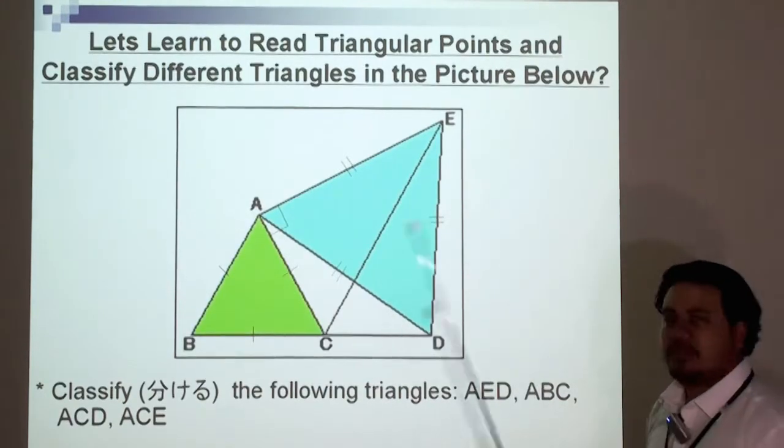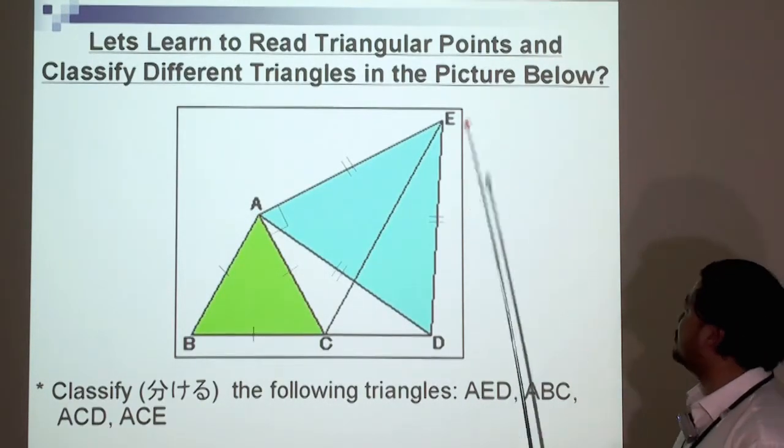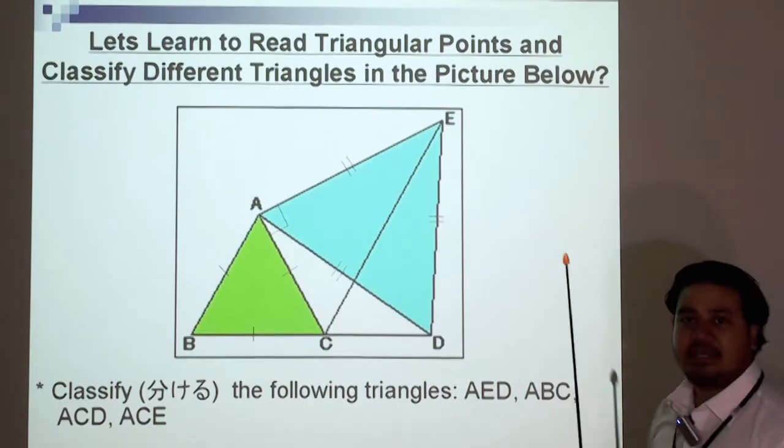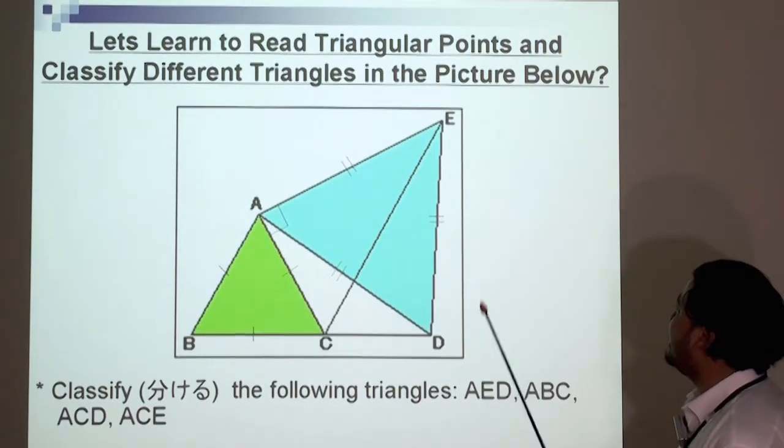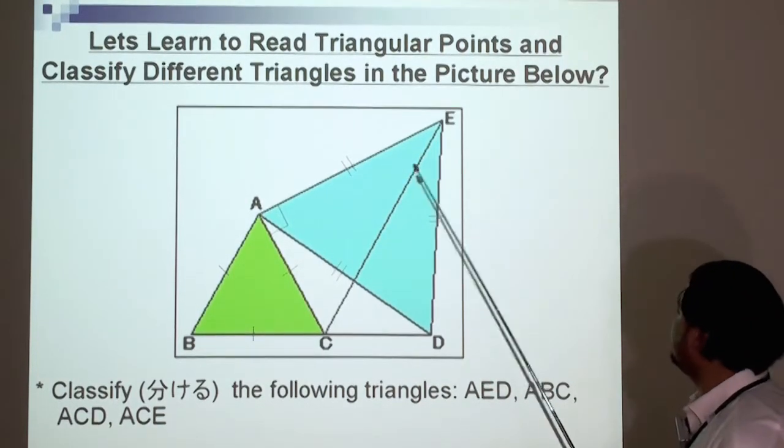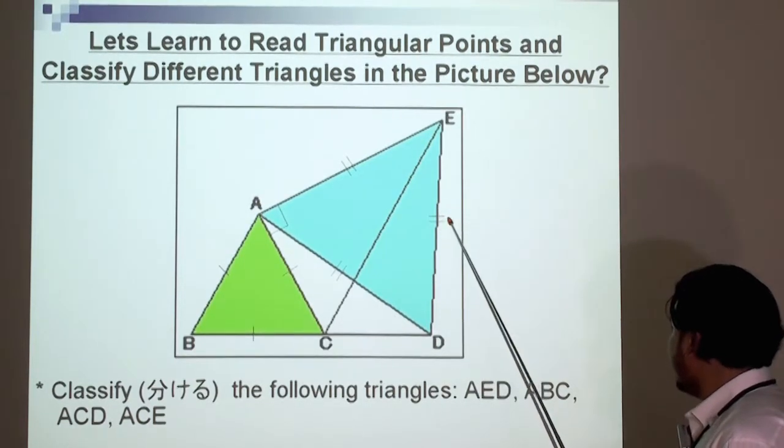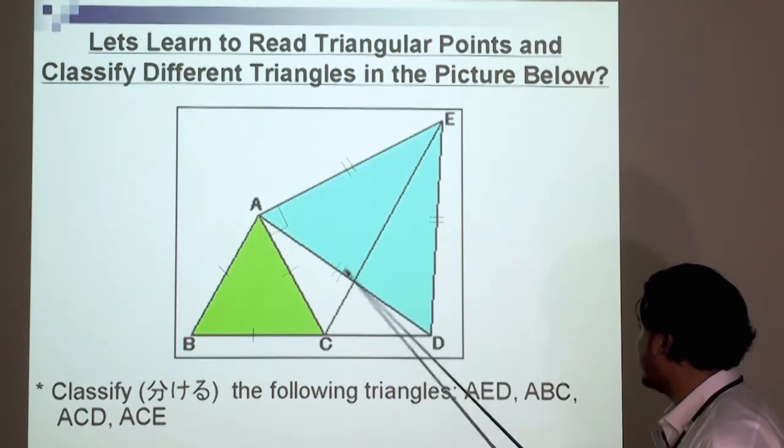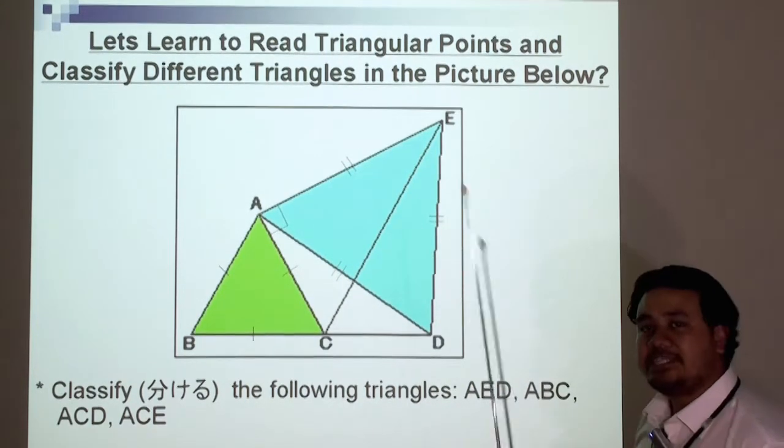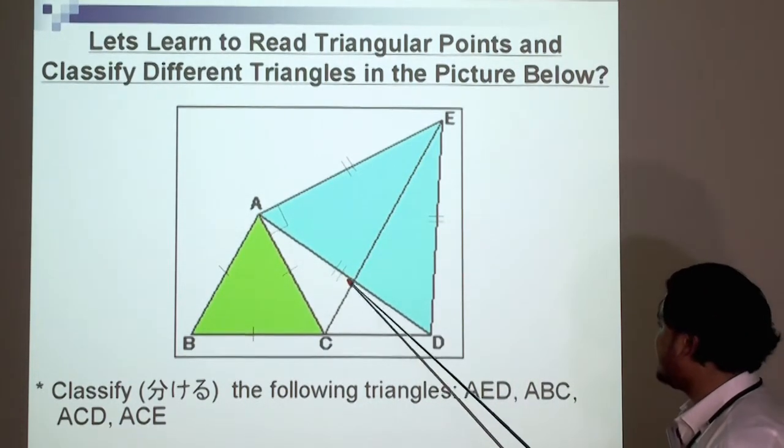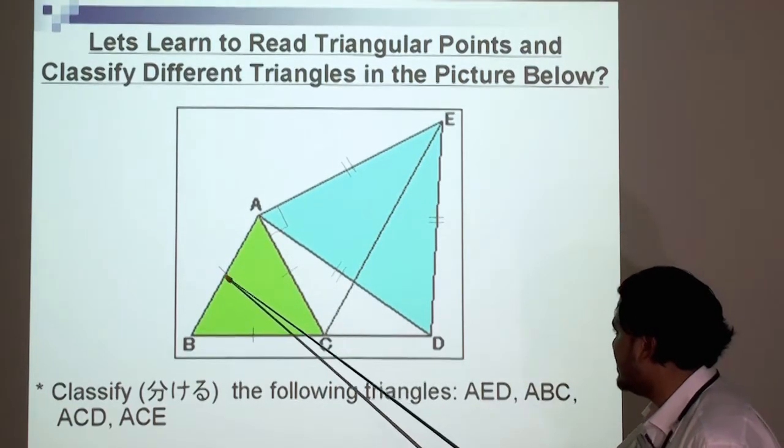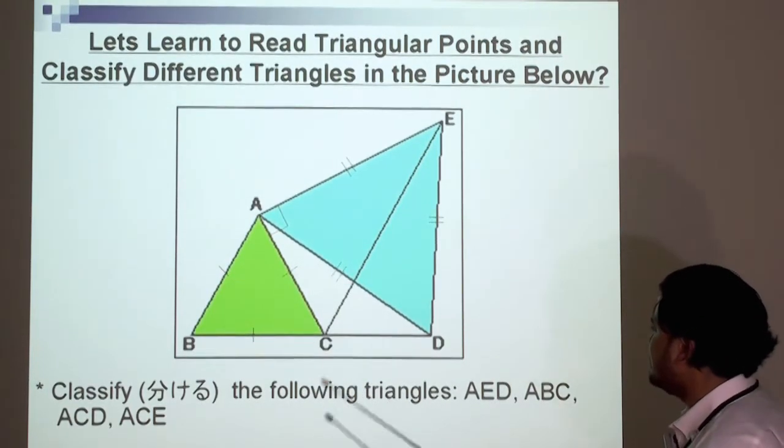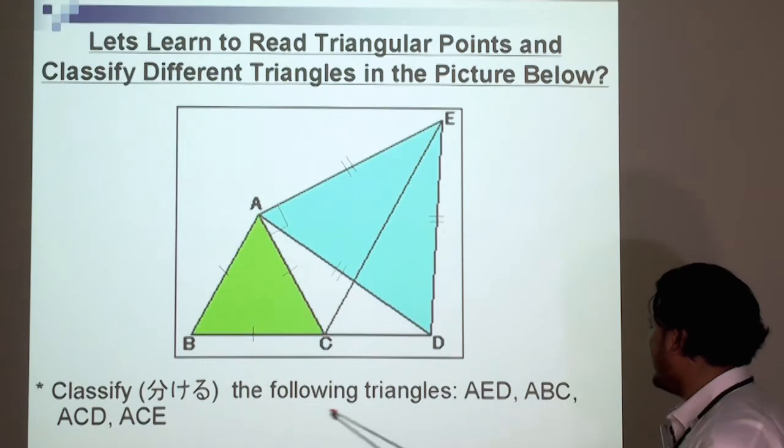Now let's move on to something a bit different. Let's learn to read triangular points and classify different triangles in the picture below. As you'll notice, if I have two lines here, then that's the same as the two lines here. So the length of these sides are exactly the same. And if it has one line, it's the same as this one. So let's classify the following triangles.